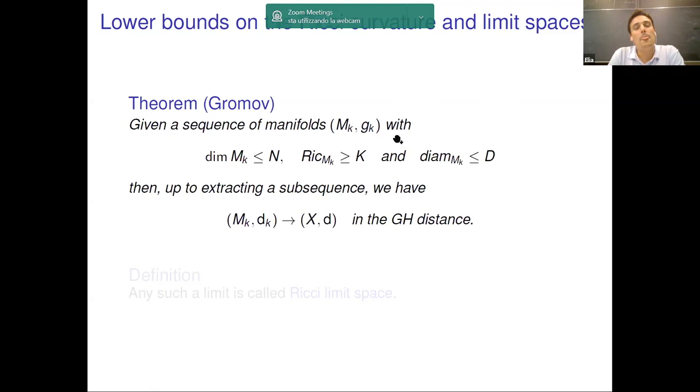Then given any such a sequence, we can extract a subsequence which converges with respect to the Gromov-Hausdorff distance. The Gromov-Hausdorff distance is a distance for metric spaces. It is a natural generalization of the well-known Hausdorff distance for compact subsets of the Euclidean space. Here I'm denoting by d_k the natural Riemannian distance associated to the metric g_k. And the limit here is just a priori a geodesic metric space. Any such object is called a Ricci limit space.